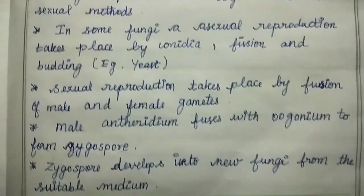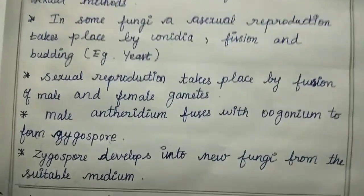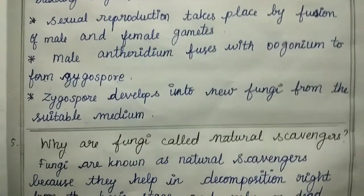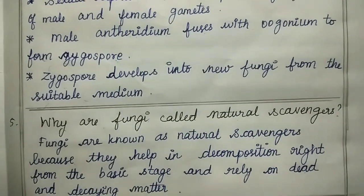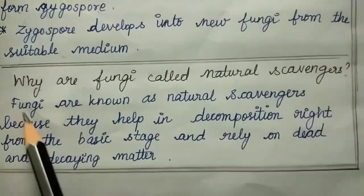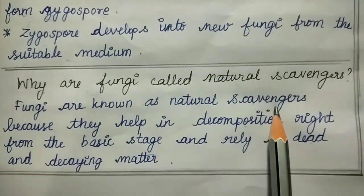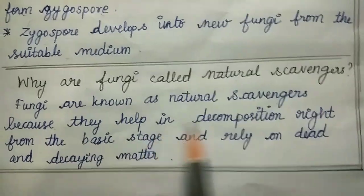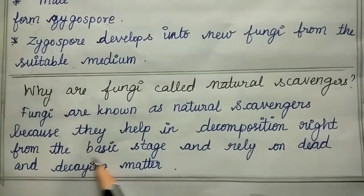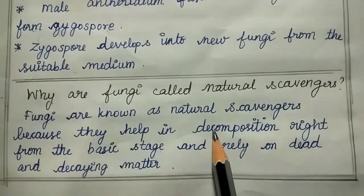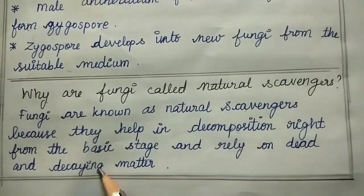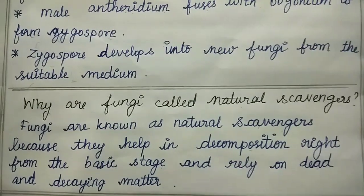Fifth question: why are fungi called natural scavengers? Because they help in decomposition right from the basic stage. They depend on dead and decaying matter.